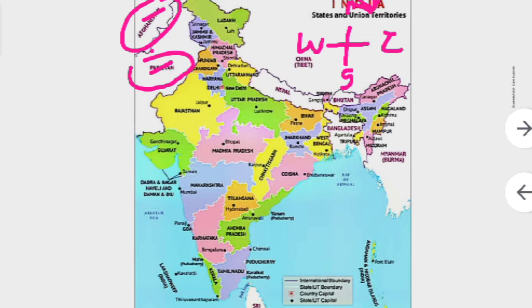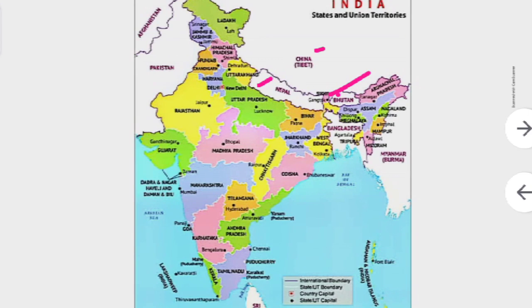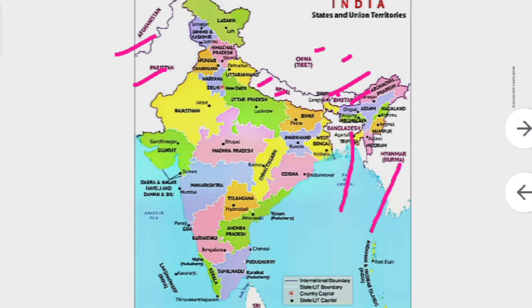India shares its border with Nepal, China, and Bhutan in the northern part. In the eastern part, India shares its border with Bangladesh and Myanmar - Myanmar is otherwise called Burma. So India shares its borders with Pakistan and Afghanistan in the north-west, China, Nepal, and Bhutan in the north, and Bangladesh and Myanmar in the east.